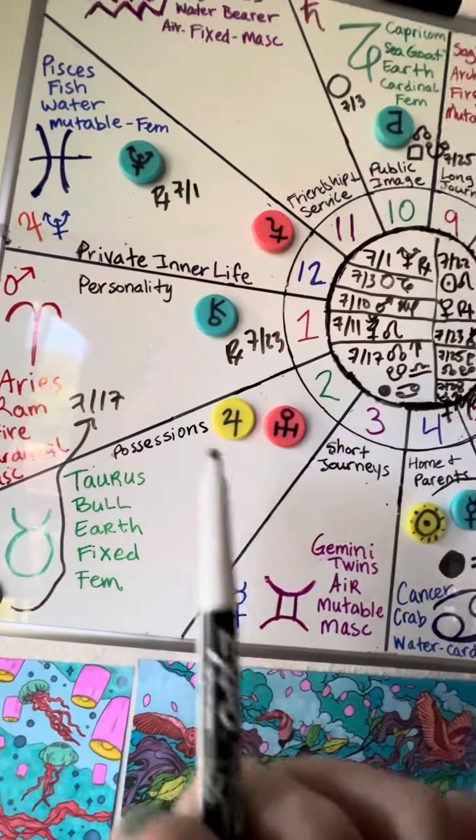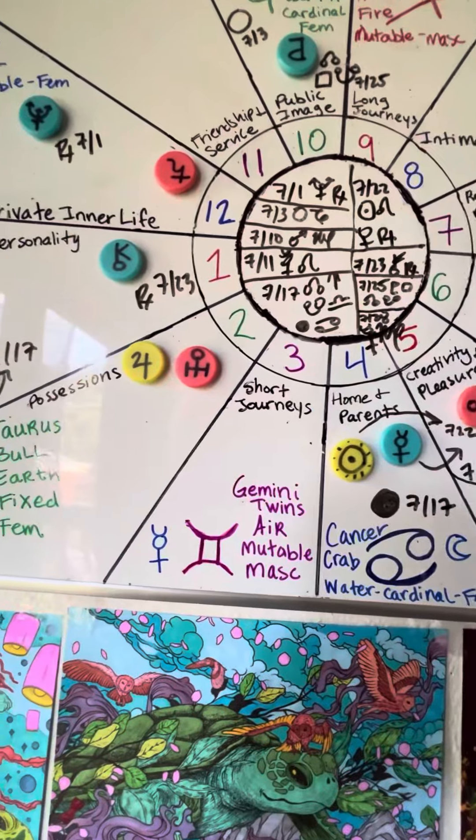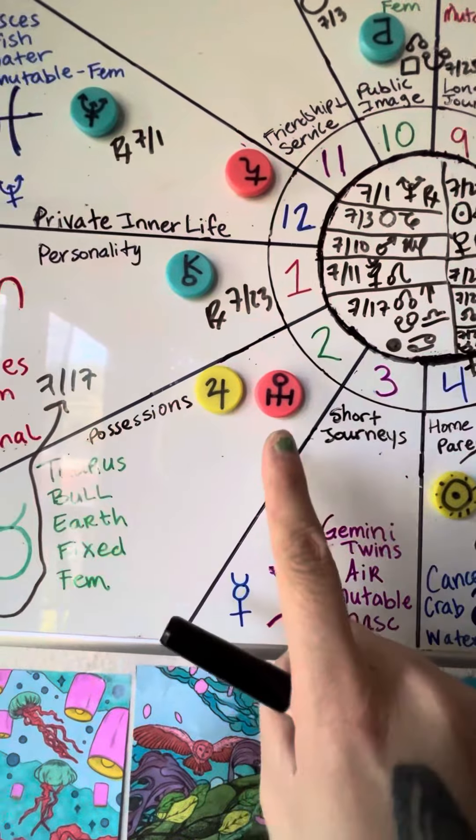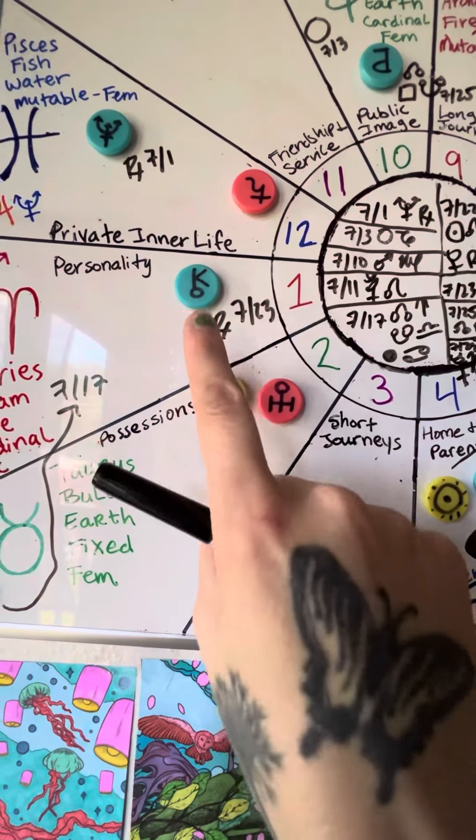And then the magnets are symbols of all the planets, so I can track where they are at all times. When they're upright, that means they're going in the regular direction.